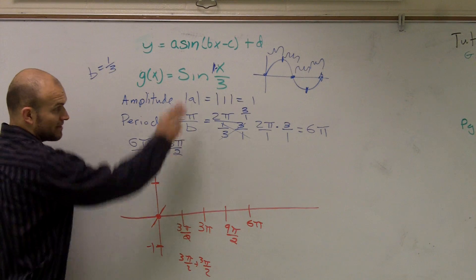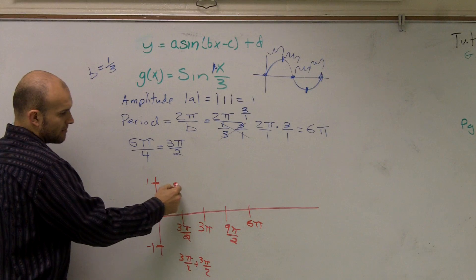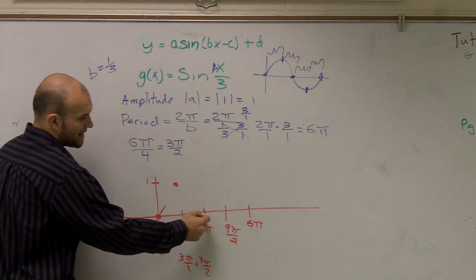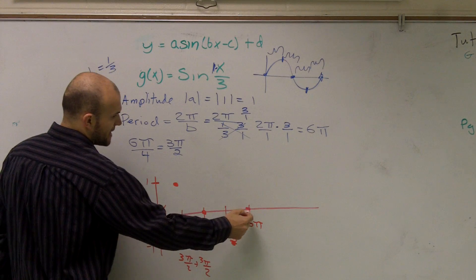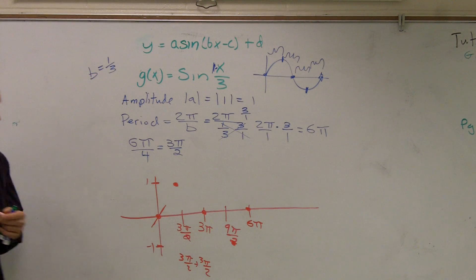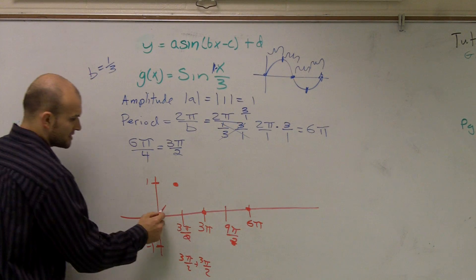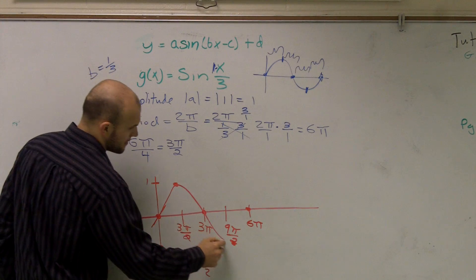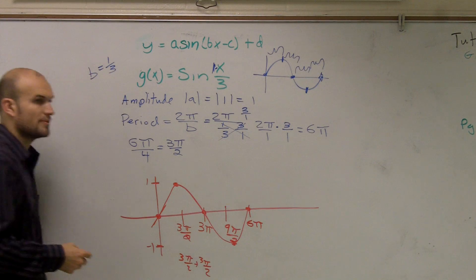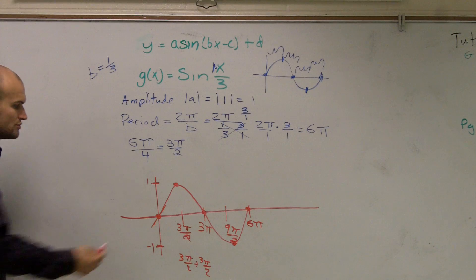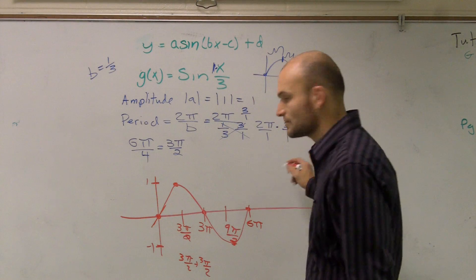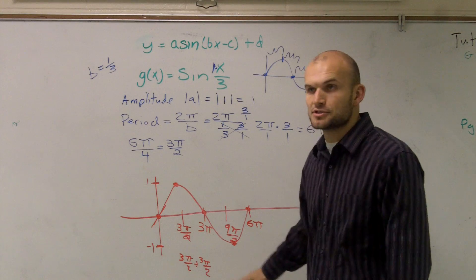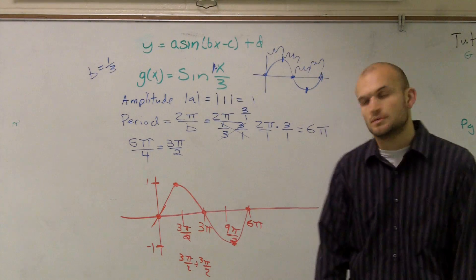So therefore, I know my maximum point by looking at the sine graph. I know my maximum is going to be up there. My intercept will be right there. My minimum is going to be down here, and my last end of my cycle will be right there. So then we simply just connect the dots. Then it says to do two periods. You can do two periods going to the left, or you can do two periods going to the right. Either way, what you're doing is just adding or subtracting 3π over 2.